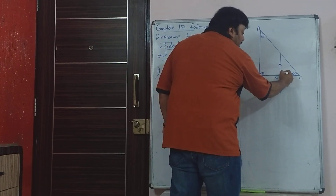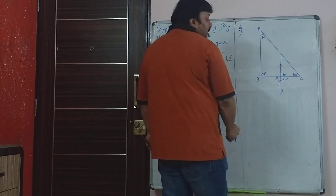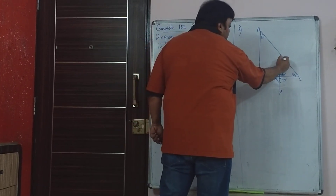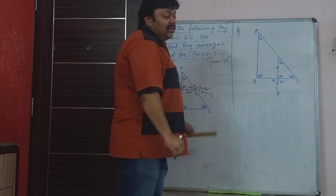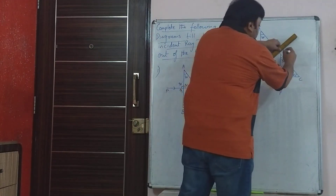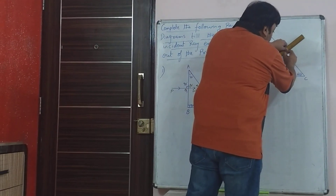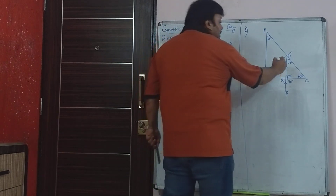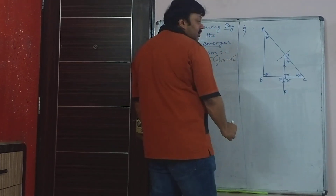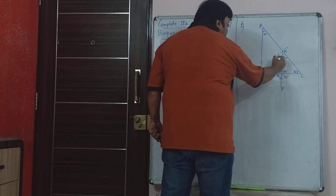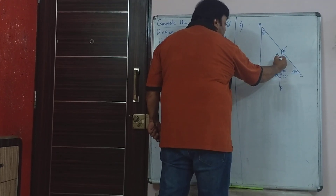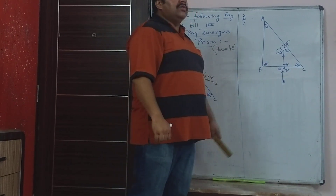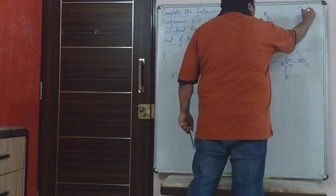You know this angle is 90 degrees — it is a linear pair. So in this triangle, since this is 90 and 60, the remaining angle will be 30 degrees by sum of angles of a triangle. Then you draw the normal at point R. Because the normal is perpendicular to the surface, the angle of incidence is 60 degrees — 60 and 30 give you 90. So the angle of incidence is 60 degrees, and the critical angle of glass is 42 degrees.